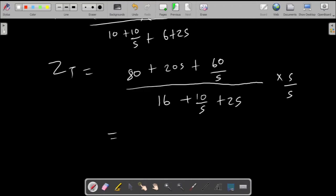So multiplying the top and the bottom by s, we'll have 80s, then plus 20 s squared plus 60. At the bottom we have 16s plus 10 plus 2 s squared.